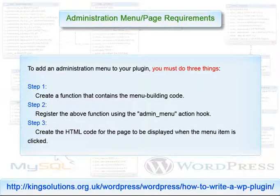To add an administration menu to your plugin, you must do three things. One, create a function that contains the menu building code. Two, register the above function using the admin menu action hook. Three, create the HTML code for the page to be displayed when the menu item is clicked. The first two steps are exactly the same as any other plugin. The third step, creating the HTML output, is usually the step I find the hardest.